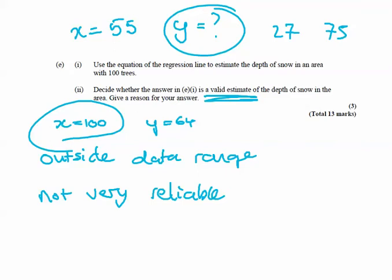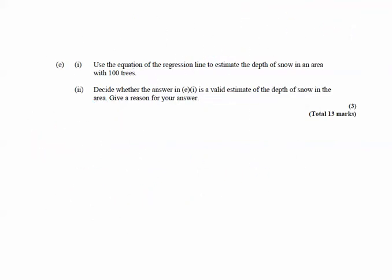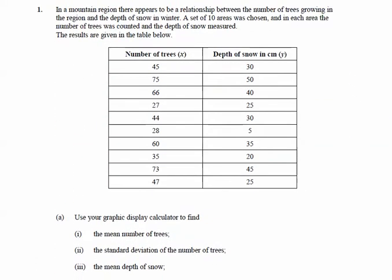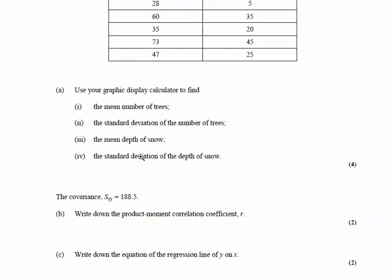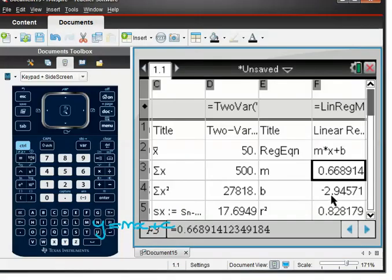That's really it for Pearson's and linear regression and two variables. They're only ever going to ask you to work out those three things, and all of that is done on the calculator: mean and standard deviation on the calculator, Pearson's on the calculator, and the linear regression formula — the equation of the line of best fit y = mx + c. Both m and c come from the calculator, and that's pretty much it.